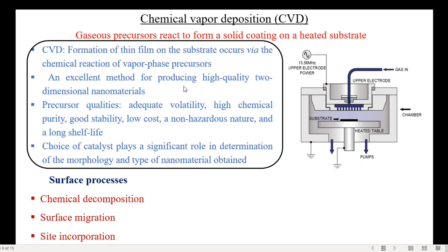CVD is an excellent method for producing high-quality two-dimensional nanomaterials. The precursor qualities required are adequate volatility, high chemical purity, good stability, low cost, a non-hazardous nature, and a long shelf life. The choice of catalyst plays a significant role in determining the morphology and type of nanomaterial obtained. The surface processes are ordered as chemical decomposition, surface migration, and site incorporation.